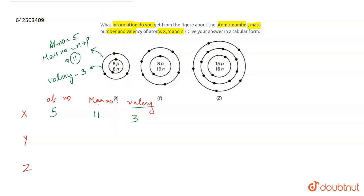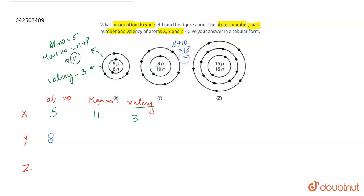Talking about Y: if you look at Y, it has eight protons and ten neutrons. The number of protons equals the atomic number, so the atomic number of Y is eight. The mass number is eight plus ten, which equals 18, because the number of protons plus neutrons accounts for 18.